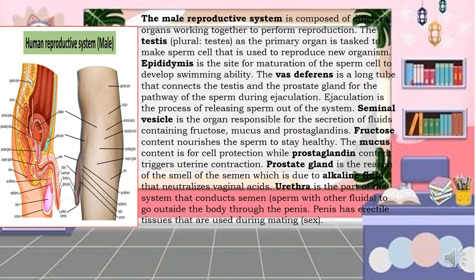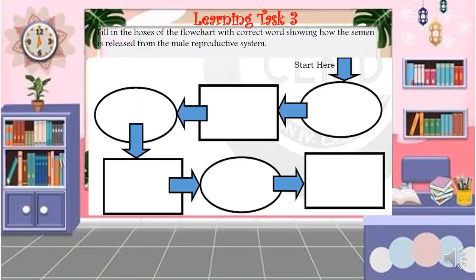The penis is erectile tissue used during mating or sex. Now after knowing all the parts of the male reproductive system, it is time to answer Learning Task 3. Fill in the boxes of the flowchart with correct words showing how semen is released from the male reproductive system.